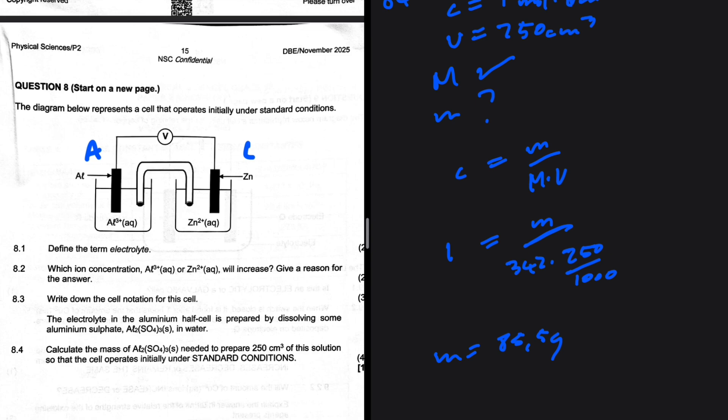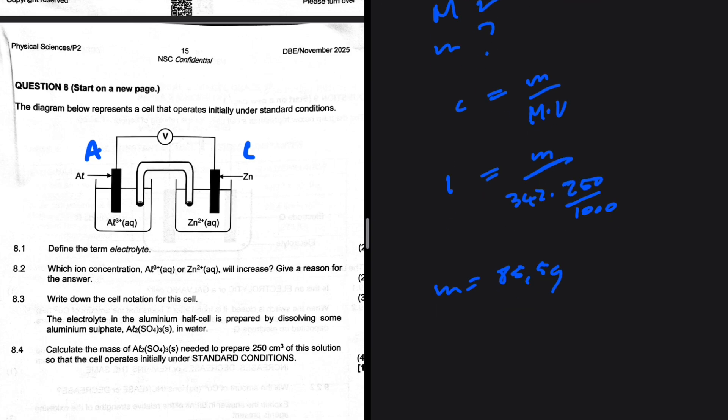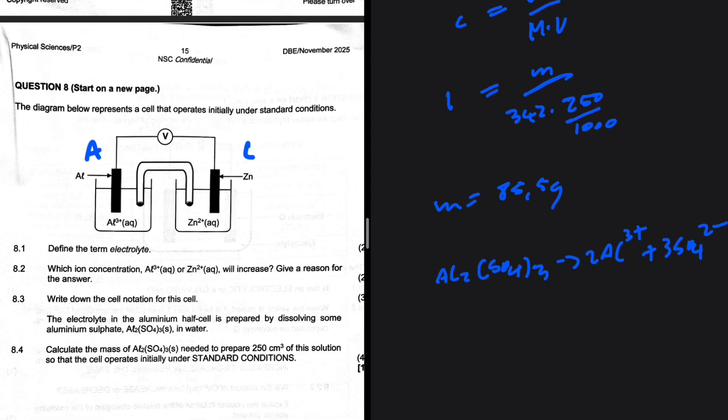Right. So this is where a lot of people are going to end. But the story carries on because, take a look at this, Al₂(SO₄)₃ dissociates to give us 2 Al³⁺ plus 3 SO₄²⁻. Right.